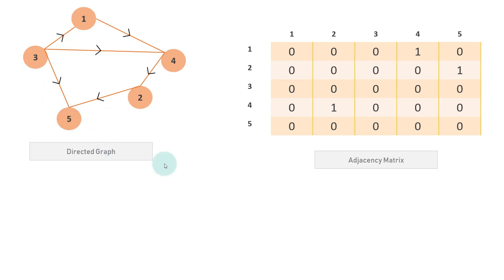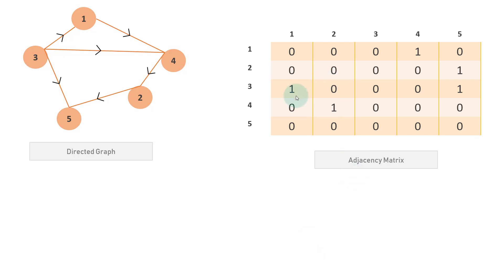Now the edge from 3 to 5: we need to take the correct direction — it is from 3 to 5, not 5 to 3. So we update three to five to one. Then 3 to 1: we update three to one, successfully marking that edge. Then 3 to 4: we update three to four. So we have now marked all the edges in the adjacency matrix.